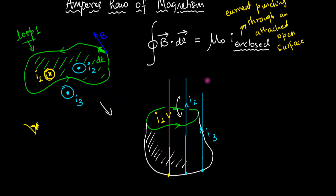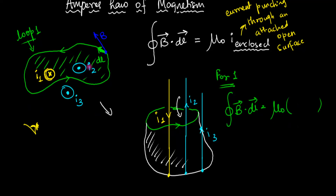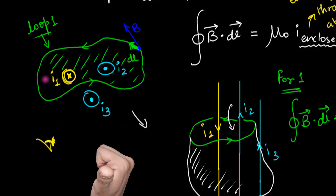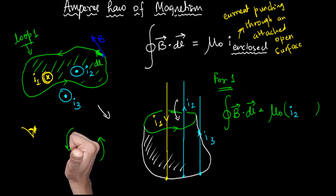For Loop 1, the integral ∮B·dl equals μ₀ times I enclosed, which is I1 and I2. Now we deal with sign conventions: which current is positive and which is negative? We use the right-hand thumb rule. We are traveling anticlockwise, so the four fingers represent the direction of motion and the thumb represents the direction of the positive current. I2 follows the thumb, so I2 is positive, giving us plus I2; and therefore I1 is negative, giving us minus I1. That is Ampere's law applied to Loop 1.